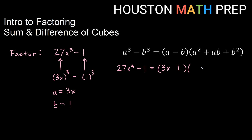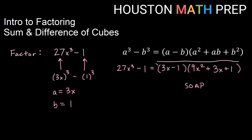Squaring 3X gives 9X squared for the front of the long factor. Squaring 1 gives 1 for the back. Multiplying A and B — 3X times 1 gives 3X for the middle. Applying SOAP starting with minus: Same is minus, Opposite is plus, and Always Plus gives plus for the last term. So 27X cubed minus 1 equals (3X − 1)(9X squared + 3X + 1).